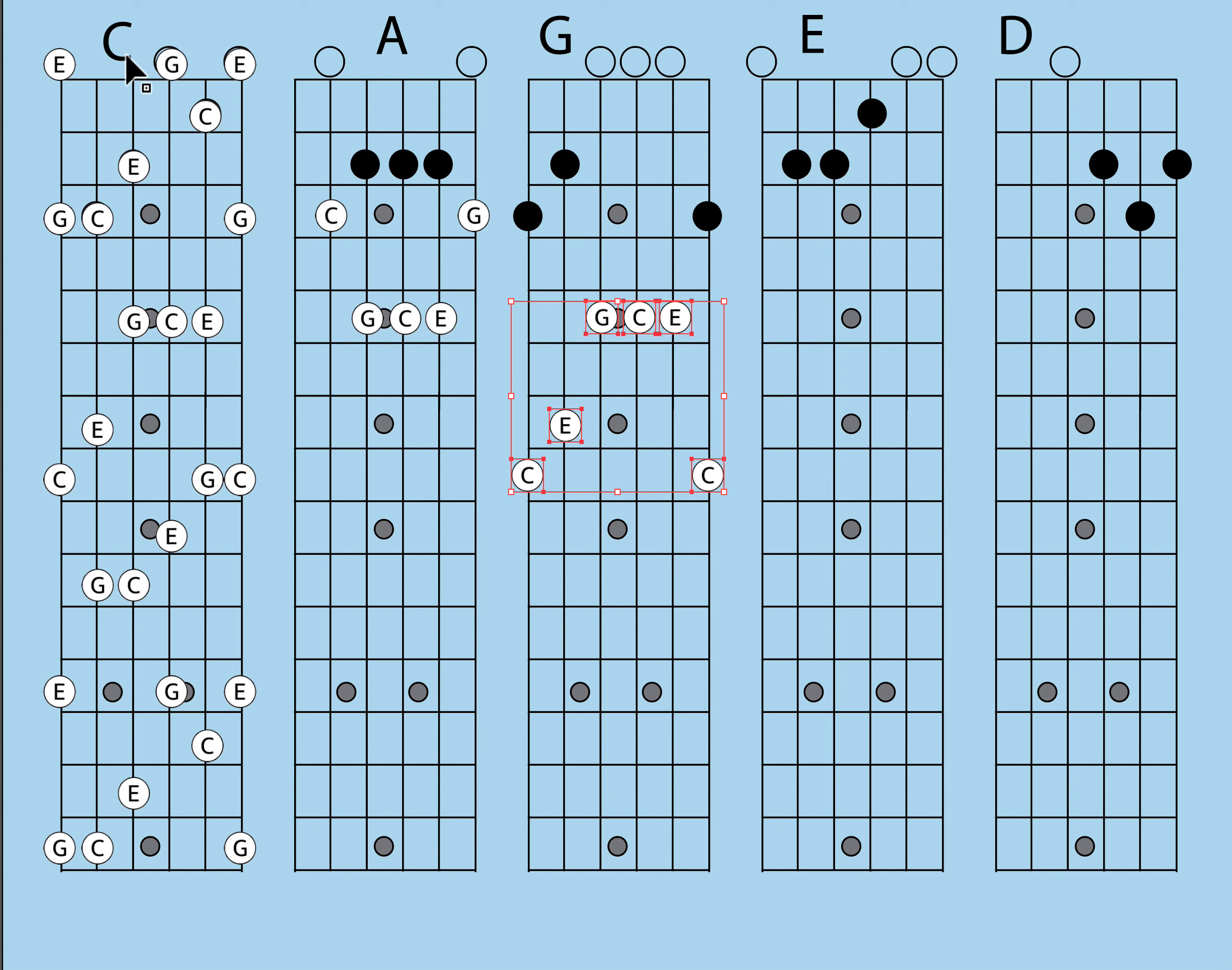So now we have C that looks like a C, C that looks like an A, C that looks like a G. Now it's quite simple if we've understood that. Now we've got C that looks like an E. If I bring this up here, we can see where the same shape is, but it's down here for C and it looks like this.